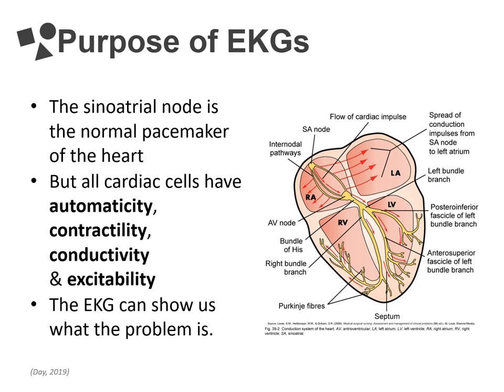When the heart is signaling properly, the sinoatrial node or SA node is in charge — the heart's normal pacemaker. It is where the electrical signal to beat should start. However, all heart cells have automaticity, contractility, conductivity, and excitability, meaning any of them can take over the role of pacemaker or receive impulses from a different pacemaker. If the heart's electrical signaling is abnormal, the heart's ability to pump blood is often affected. The EKG tracing helps us figure out what and where the problem is so that we can treat it.